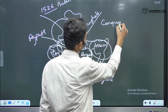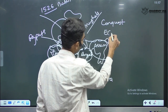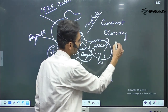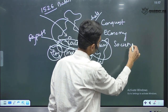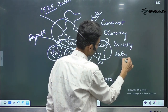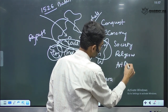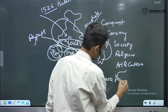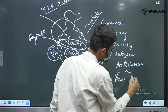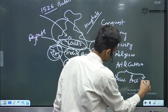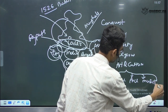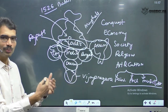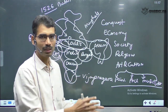Like, what is their conquest, what is the economy during that time period, what is the society, what is the religious condition, and what their contribution — like painting, architecture, music, literature. These dimensions are going to be common. Only time period changes.